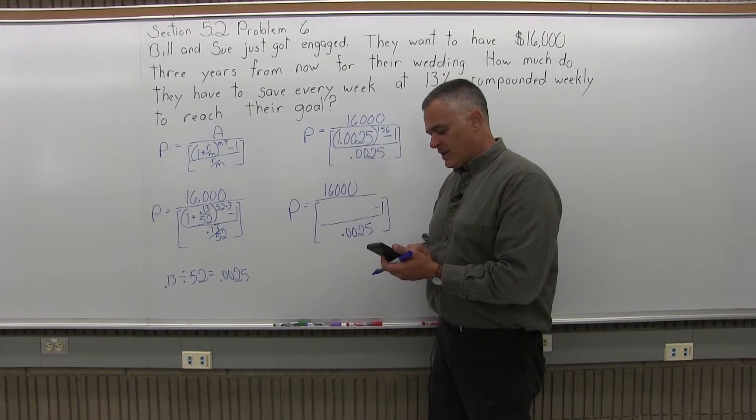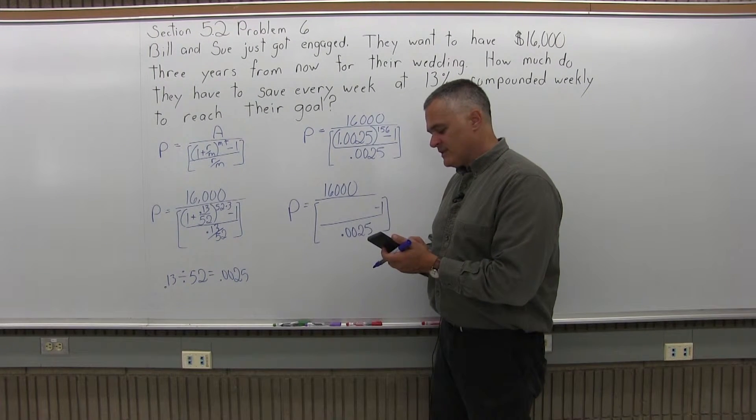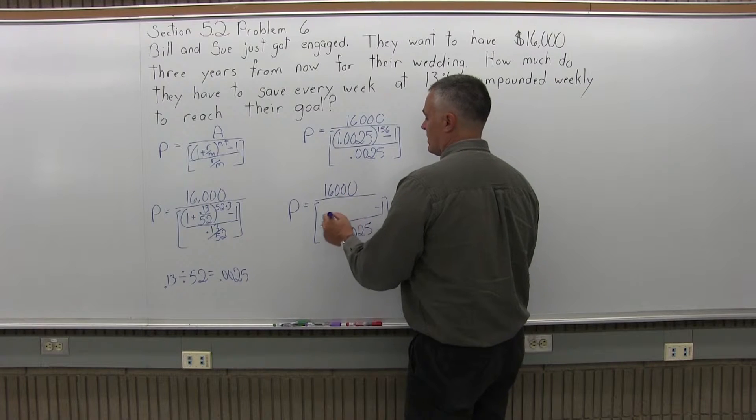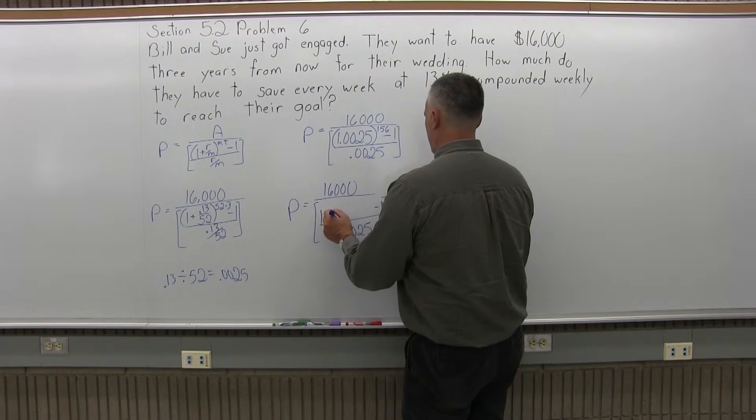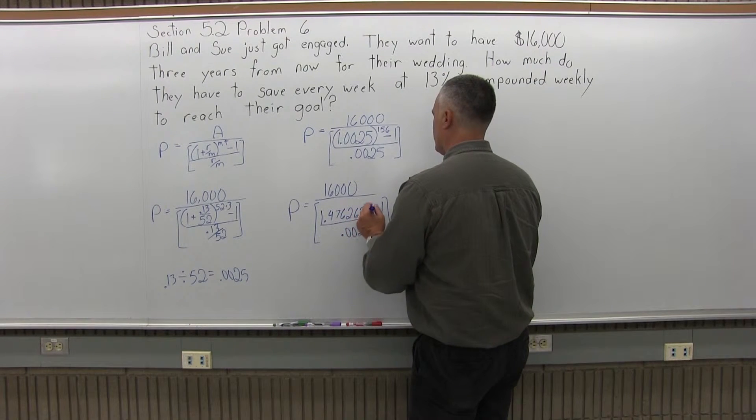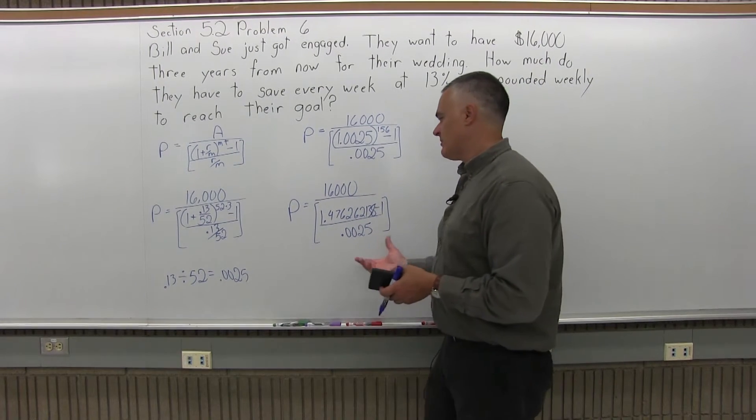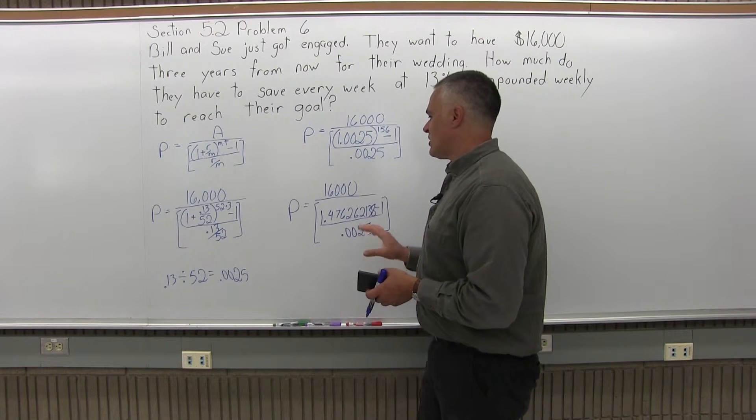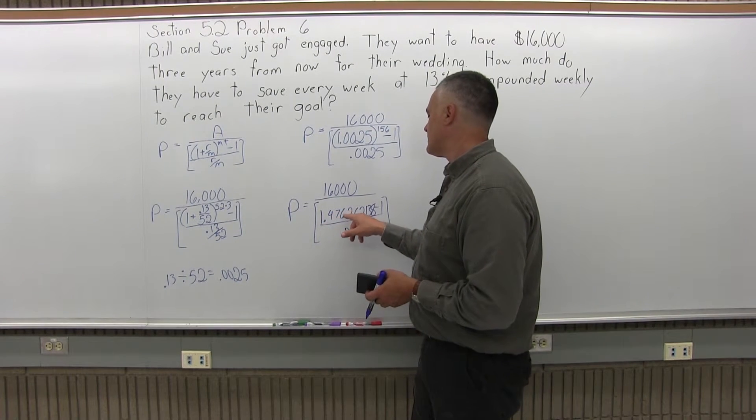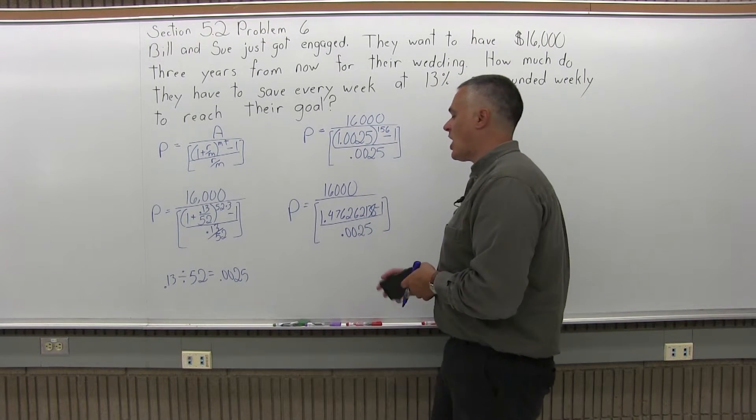So let me enter on my calculator, 1.0025. Press the exponent button. Put in an exponent of 156. Press equals. And the calculator tells me that 1.0025 to the 156th power is 1.476262138. And I keep all the decimals until I'm just about done. I round it at the very end. So at this point, I have P equals 16,000 over some brackets. The brackets have 1.476262138 minus 1 in the top of the brackets, 0.0025 in the denominator of the brackets.